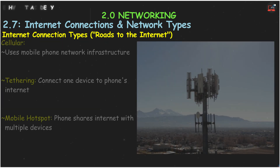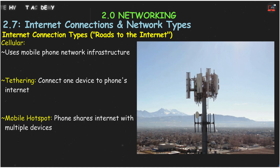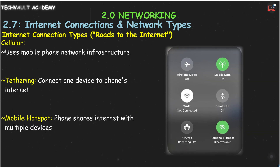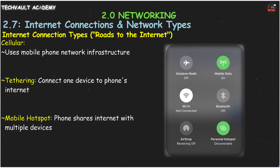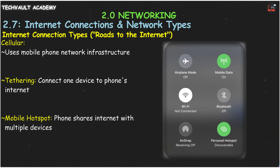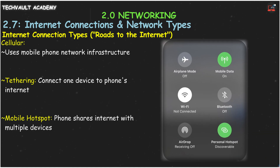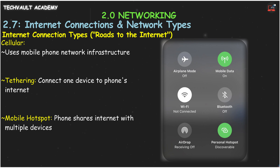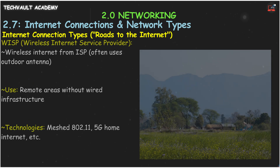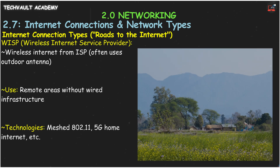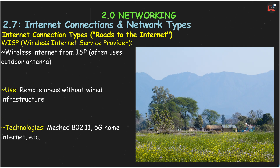Cellular internet uses your mobile phone network. You can tether a single device to your phone, or use your phone as a mobile hotspot to share its internet connection with multiple devices. Always check with your carrier about availability and costs.